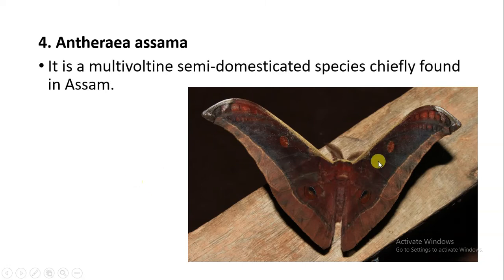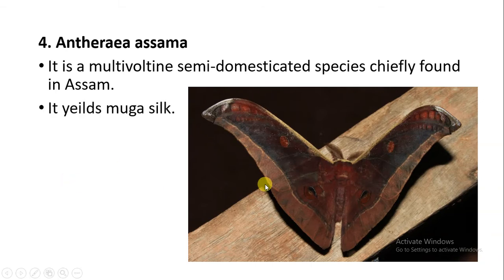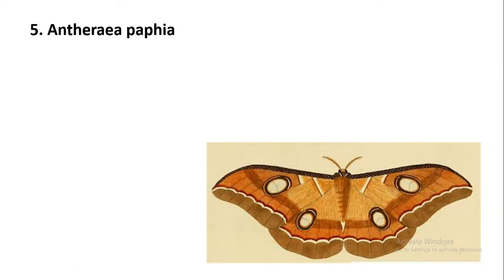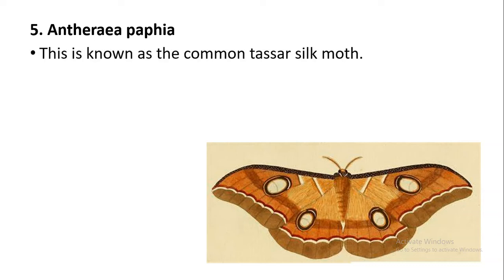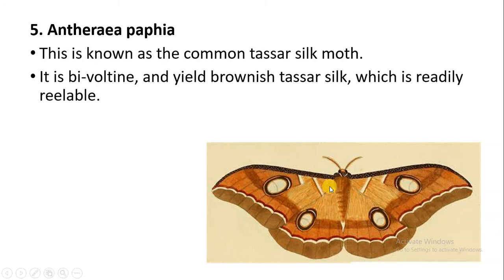The next species is Antheraea asama. This is a multivoltine, semi-domesticated species. Multivoltine means they can produce a number of generations in a year. It is specially found in Assam and yields Muga silk.